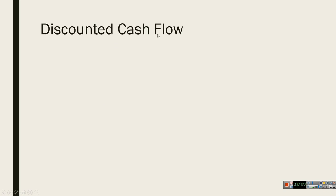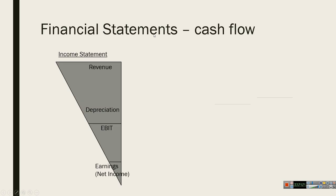The discounted cash flow method requires us to get cash flows from the business — mostly from the income statement. We focus on EBIT, the operating profit, before interest. The reason is that the cost of interest is in the denominator as a cost of capital, so including it in the cash flows would double-count it. We take it before interest but after tax. We also have to worry about depreciation — it's not actually a cash flow, just an accounting expense, and we have to correct for it.